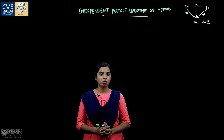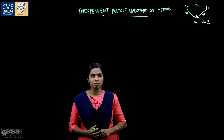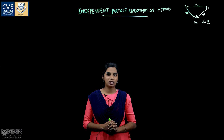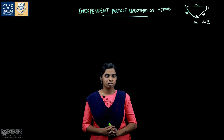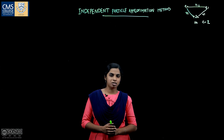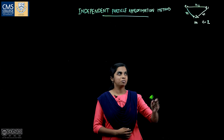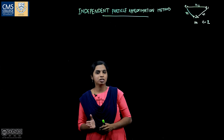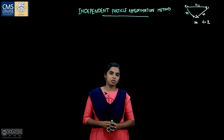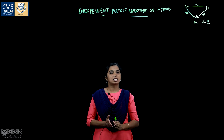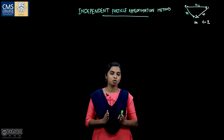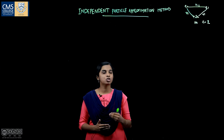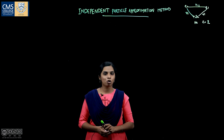Hello everyone. In this video we are going to discuss about the independent particle approximation method. As we all know, the Schrödinger wave equation can be solved exactly for hydrogen and hydrogen-like systems. Have you tried to solve the Schrödinger wave equation for a multi-electronic system or a three-particle system? For example, a helium atom. Solving the Schrödinger wave equation for a multi-electronic system is a difficult process, so we must search for approximation methods in quantum chemistry.